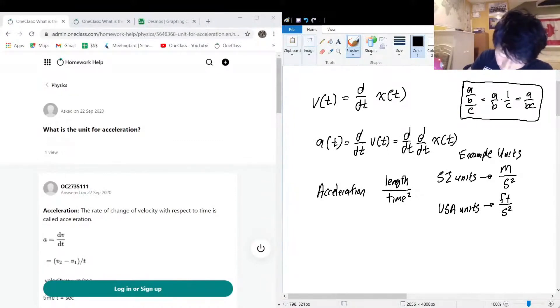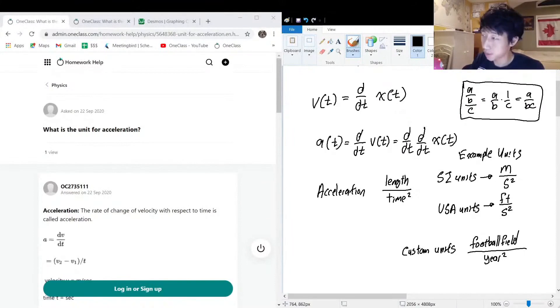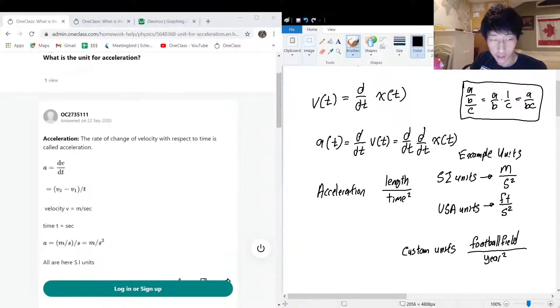You can really sub in whatever you want for length and whatever you want for time if you really want to. It could be custom units - it could be maybe a football field per year squared. It doesn't matter exactly what you put in for your units. Of course this is kind of a ridiculous unit, a football field per year squared, but as long as you have a length over time squared, some unit of time - doesn't have to be seconds, it could be years, it could be whatever time you want - that will give you the units of acceleration.